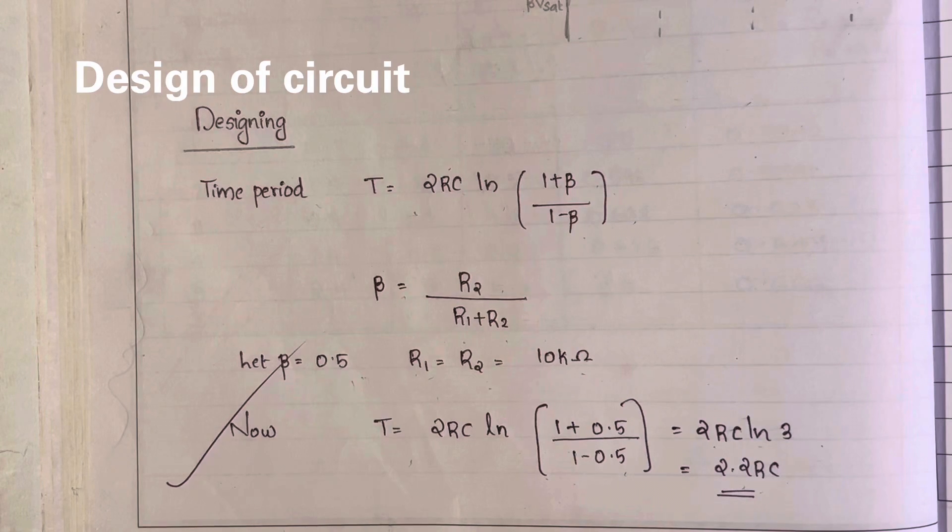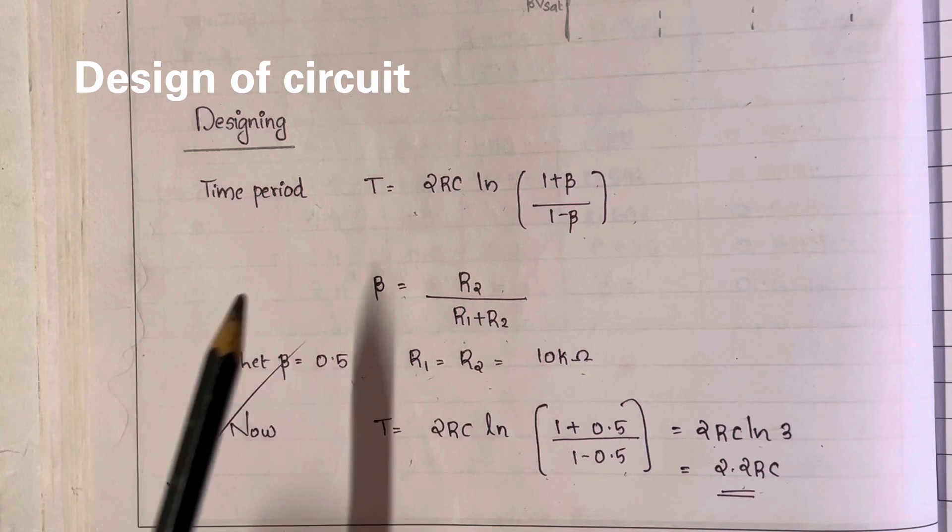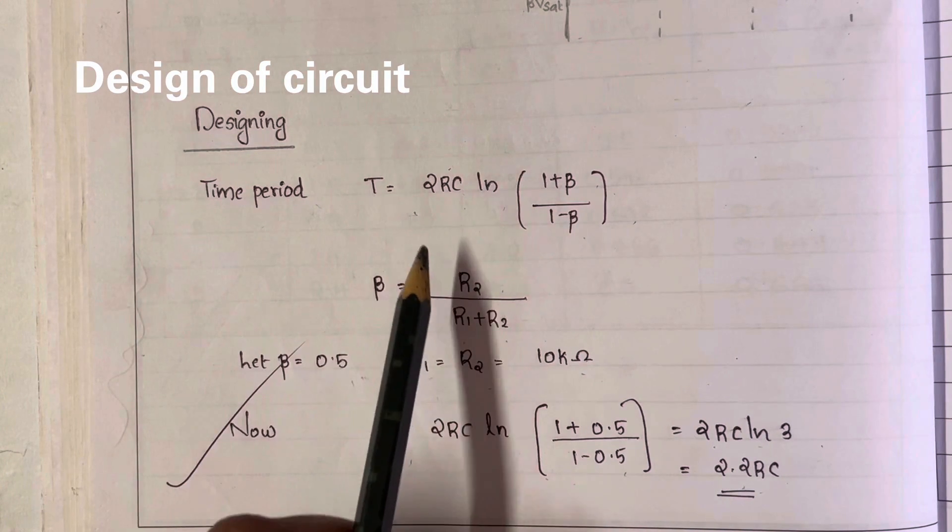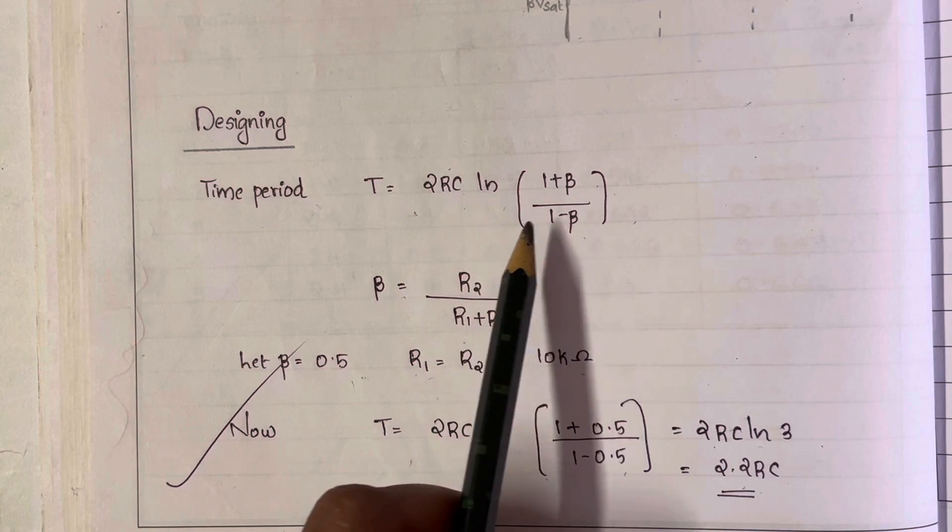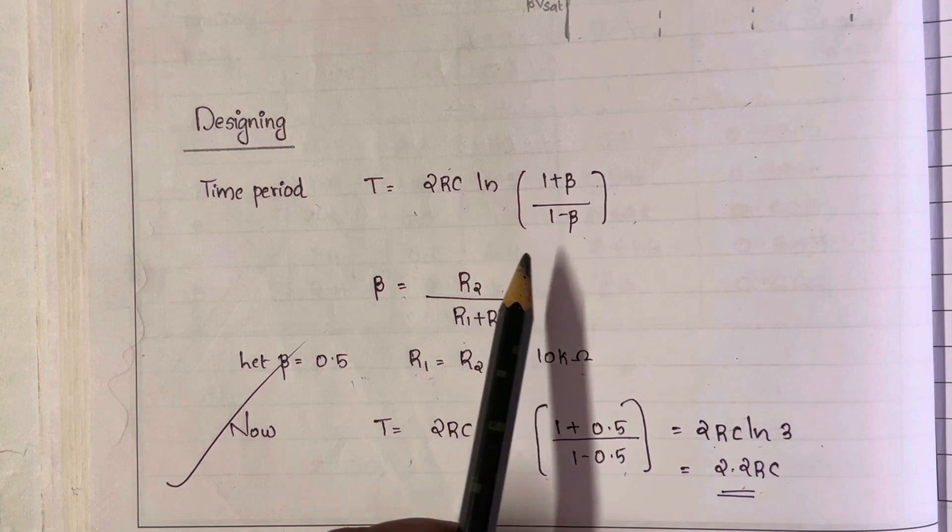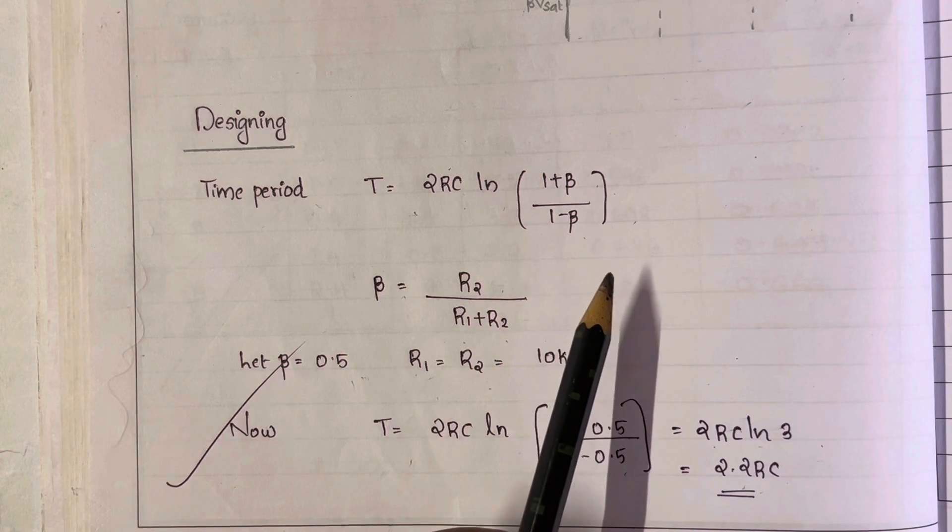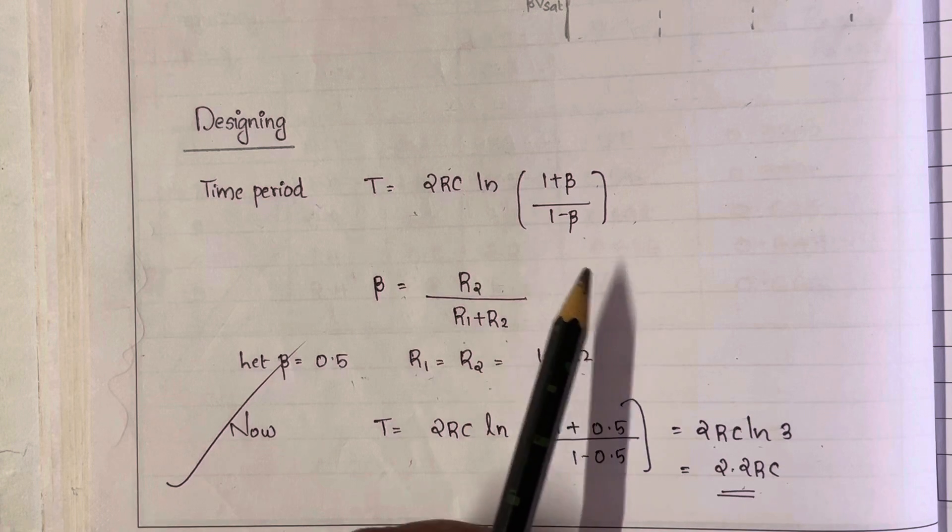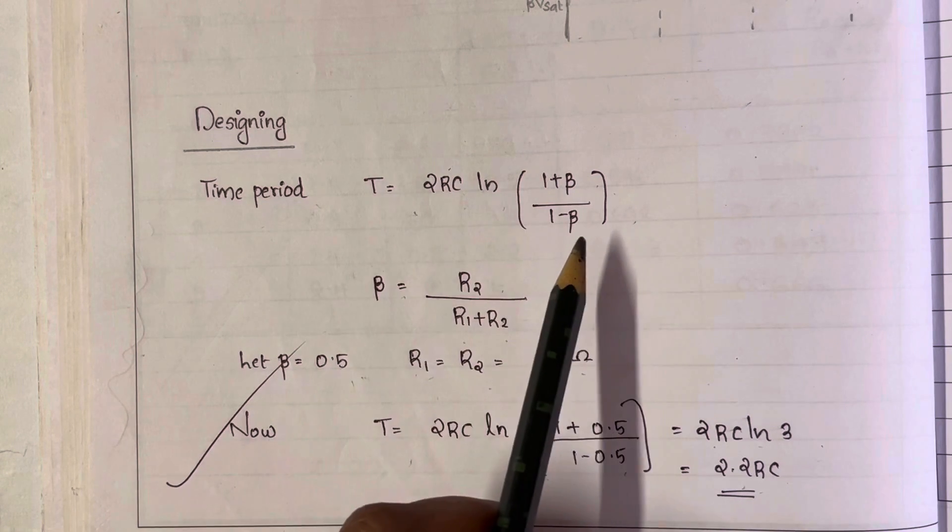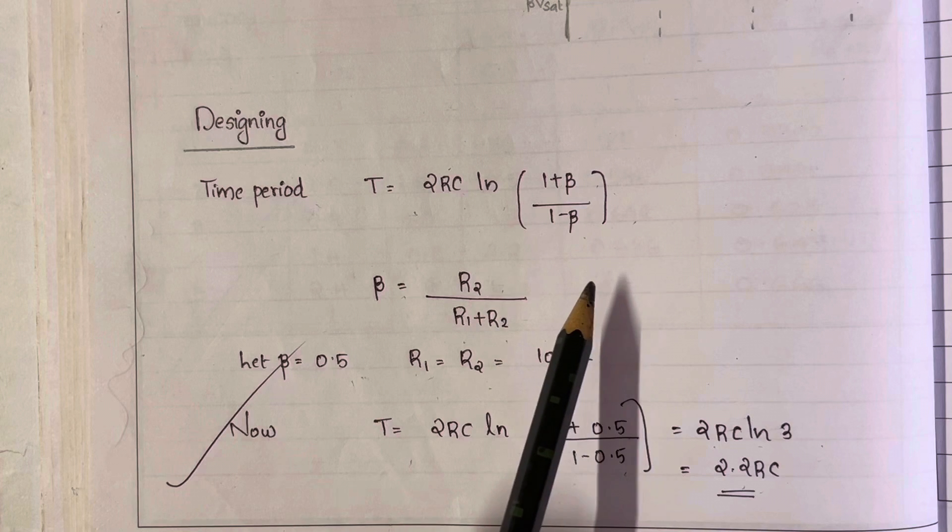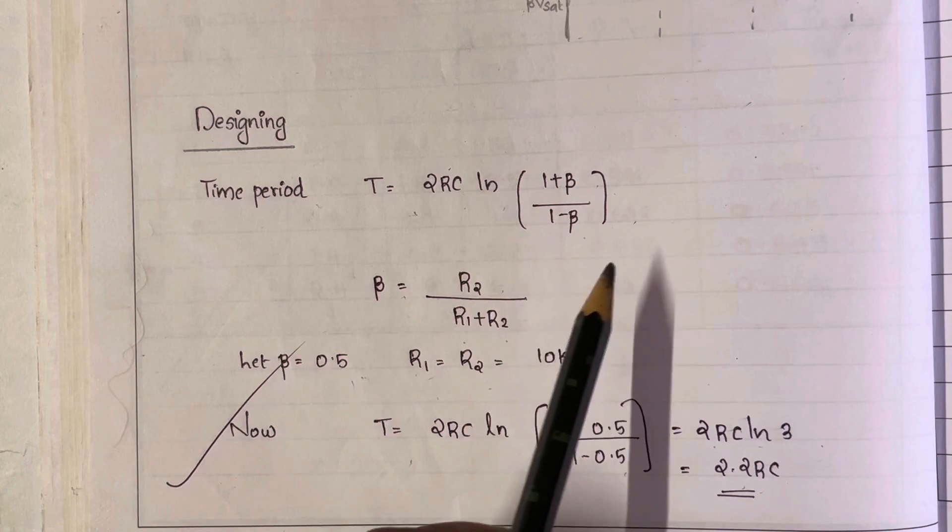Next we will check out the designing of the circuit. Time period T is given by 2RC log of (1 plus beta) by (1 minus beta), where beta is the feedback fraction. We can't go to the derivation of this expression because it will make the video a bit lengthy, so you may do it yourself.